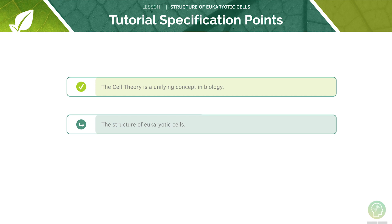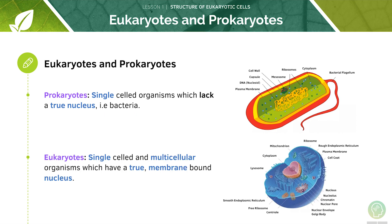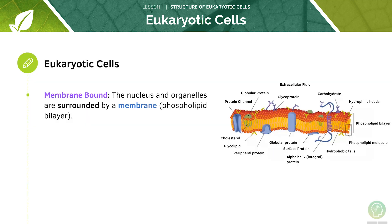Now let's look at the structure of eukaryotic cells. All life on earth can be divided into two very broad classes: eukaryotes and prokaryotes. Prokaryotes are single-celled organisms which lack a true nucleus — for example, bacteria. Eukaryotes are single-celled and multicellular organisms which have a true membrane-bound nucleus. Here's a table showing the classification of eukaryotic cells and their contents. Eukaryotic cells have a true membrane-bound nucleus and membrane-bound organelles — membrane-bound simply means that the nucleus and organelles are surrounded by a membrane, in this case a phospholipid bilayer.